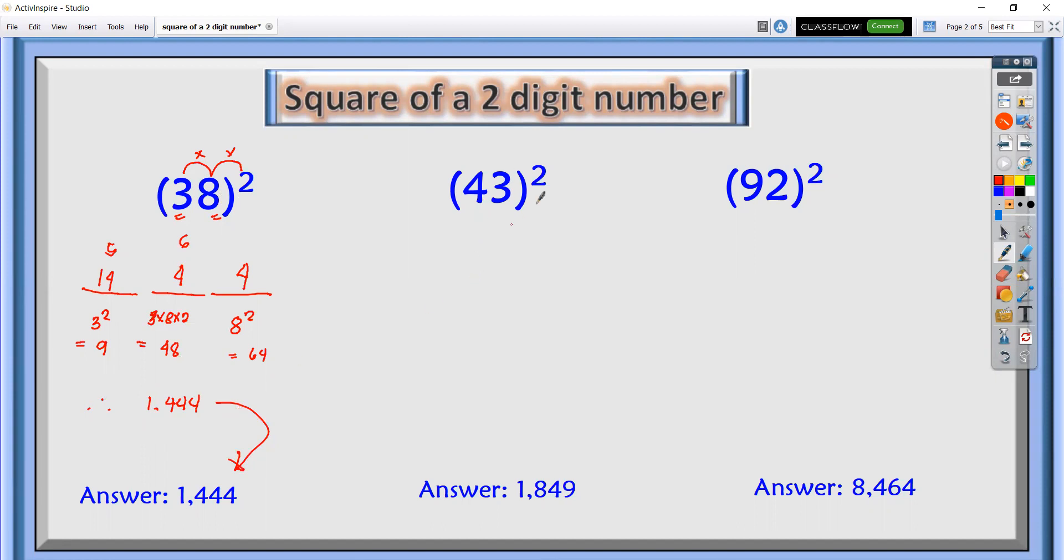Next number, 43 quantity squared. Let's draw three lines.